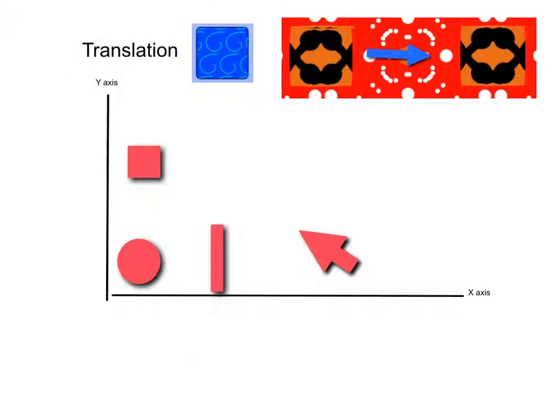Translation is also quite often used in Kaleido Paint. Here is how translation works. Translation is moving an object from one place to another. So I'm going to move this circle to another place.